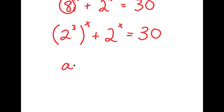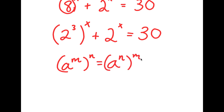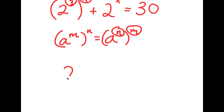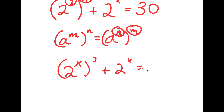Now, if I have something in the form a to the power of m to the power of n, this is the same thing as a to the power of n to the power of m — so I can switch the places of n and m. In this case, I have 2 to the power of 3 to the power of x, and I'm going to switch the places of 3 and x. So I get 2 to the power of x to the power of 3 plus 2 to the power of x is equal to 30.